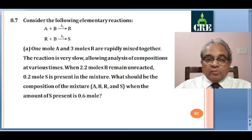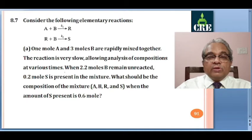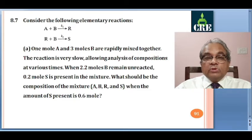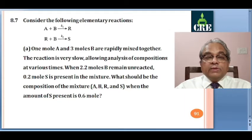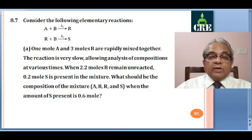We have to solve part A. 1 mole of A and 3 moles of B are rapidly mixed together. The reaction is very slow, allowing analysis of decomposition at various times. When 2.2 moles of B remain unreacted, meaning 0.8 moles reacted, 0.2 moles of S is present in the mixture.